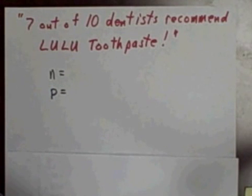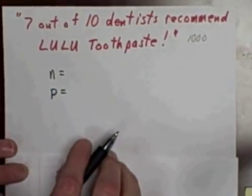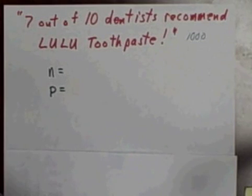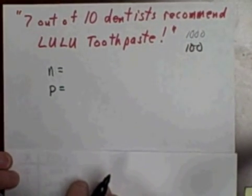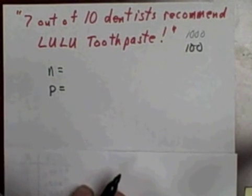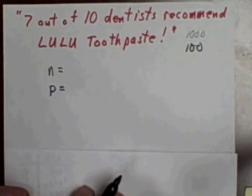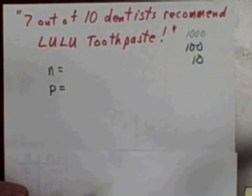We don't know how many people they surveyed. They may have surveyed a thousand, and if they did survey a thousand dentists, we know that means 700 of the dentists recommended Lulu Toothpaste. They may have only surveyed a hundred - of course that means then that 70 of those hundred recommended Lulu Toothpaste. I mean, if they did it improperly or dishonestly, they may have only surveyed ten dentists and managed to derive seven of them to claim that they recommend Lulu Toothpaste.